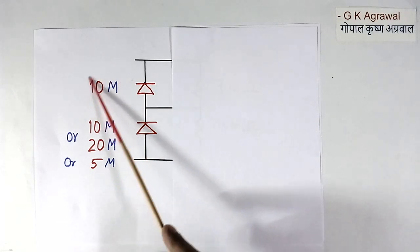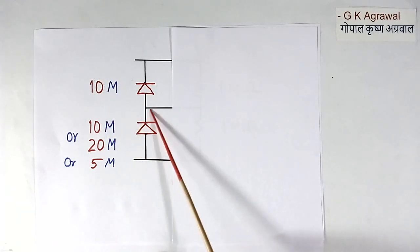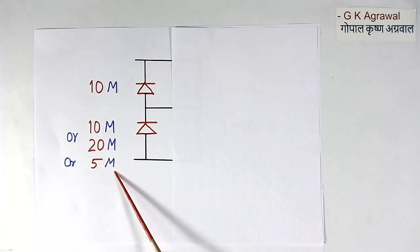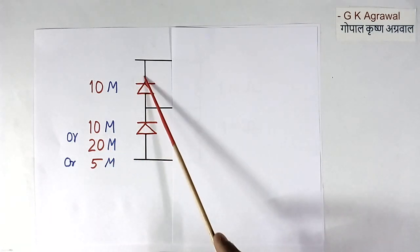So suppose this is 10M ohm. So resistance of this in reverse bias condition may be more than 10, 20, may be less than 10, say 5M ohm.